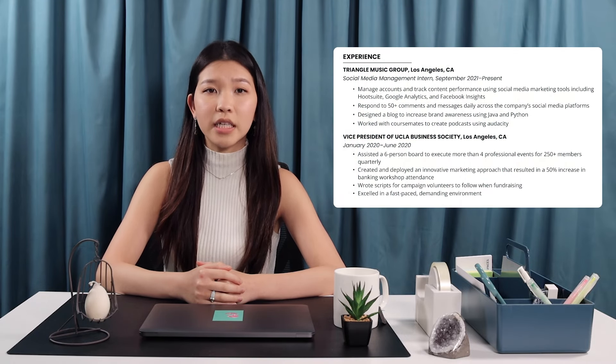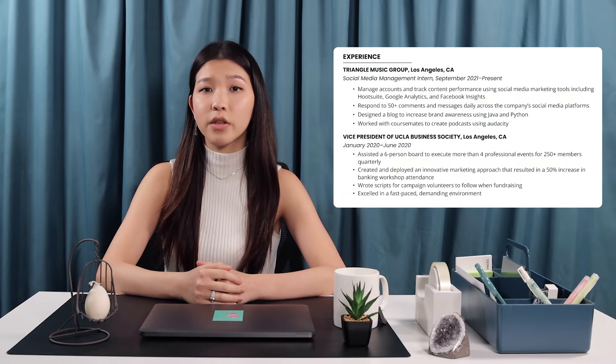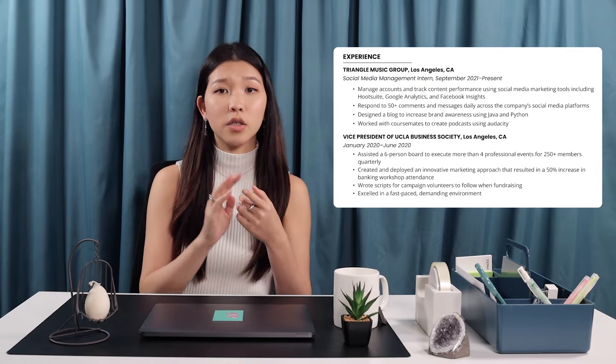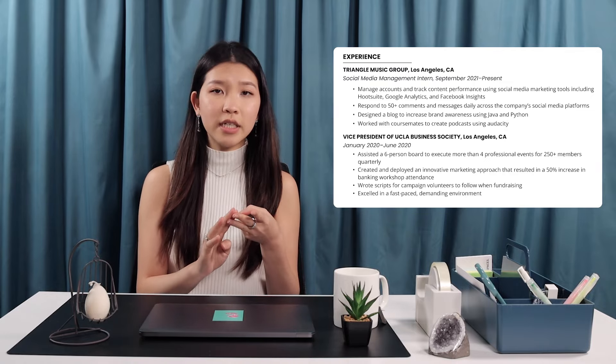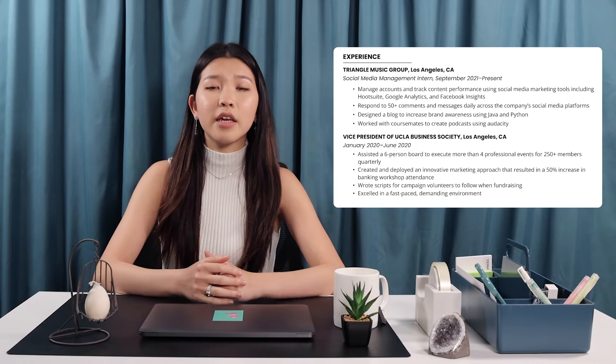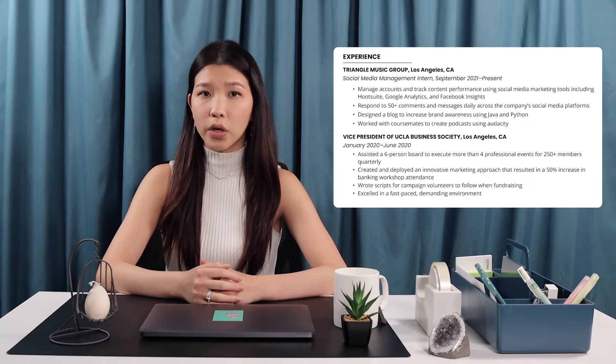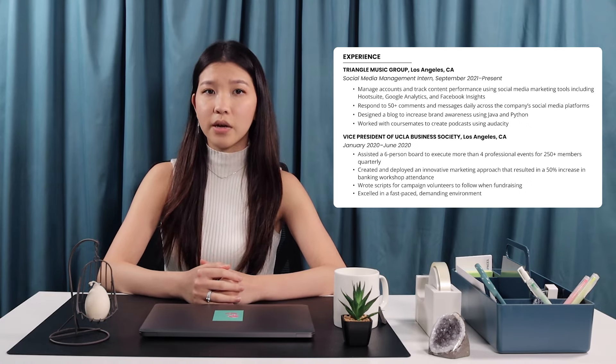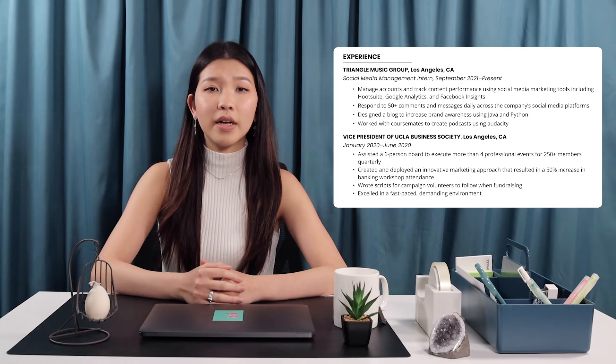Now follow your resume objective with either your education, skills, or experience section. Start with a section that makes you the strongest candidate for the specific position you're applying for. With no work experience, you can still fill out an experience section with a variety of things, such as coursework, internships, volunteering, projects, or even fundraising. Think back to anything you've done in school or outside of school that relates to the job that you want.